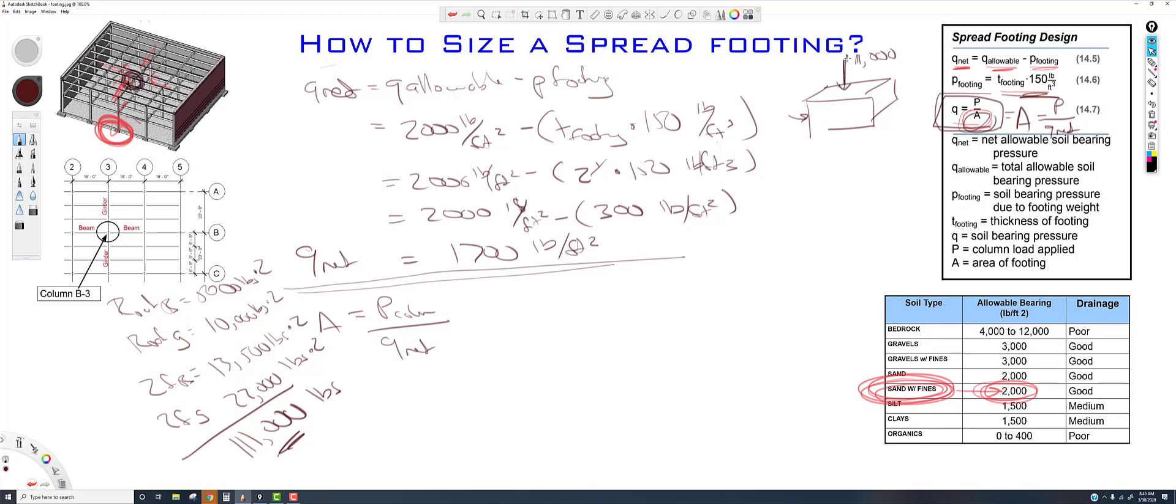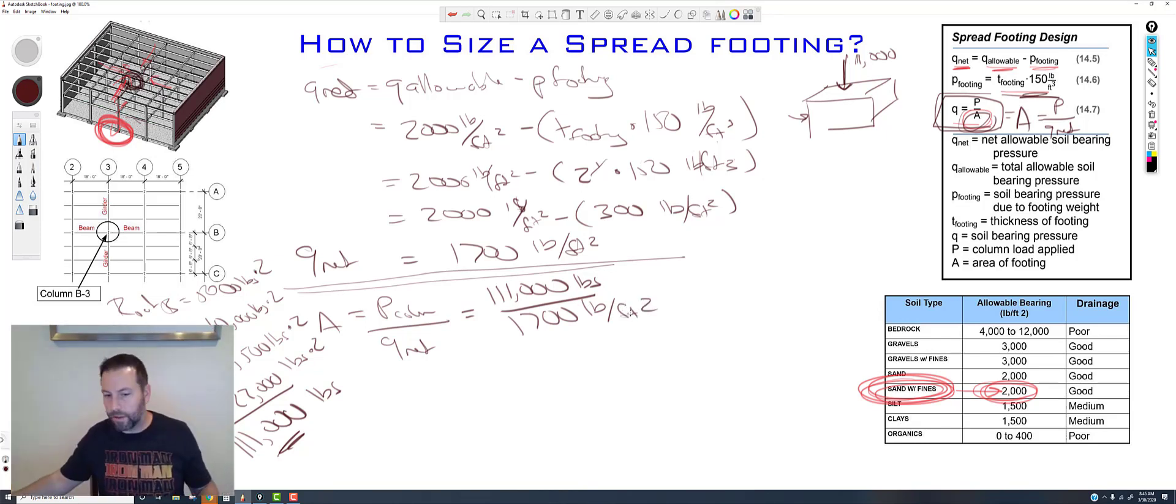Pushing down onto the spread footing. So, area equals, pressure of the column, 111,000 pounds divided by Q net, 1,700 pounds per foot squared. So, if we get the calculator out of this one. So, 111,000 divided by 1,700. We get 65.3, roughly, 0.3 feet squared. That is the area.